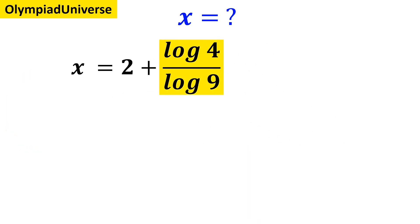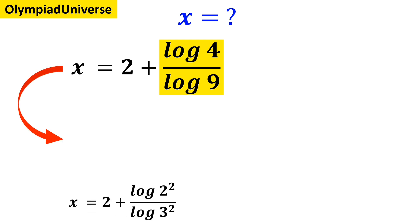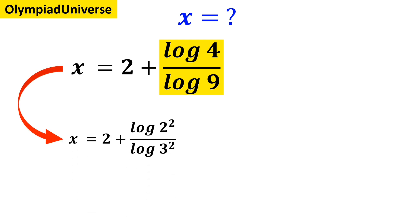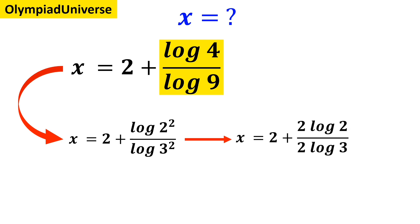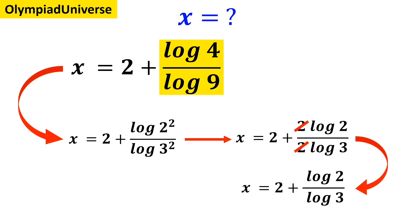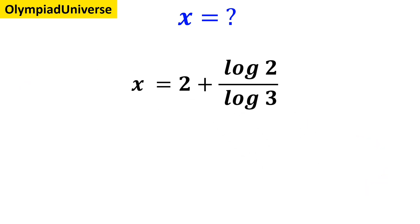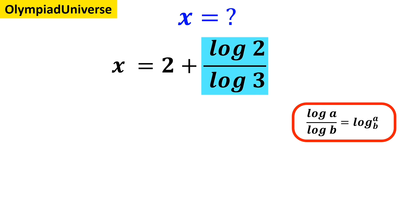Now it's time for the second fraction. We can rewrite this expression as x equals 2 plus log of 2 squared over log of 3 squared, which simplifies to x equals 2 plus 2 times log of 2 over 2 times log of 3. Now the 2's cancel out, and this expression simplifies to x equals 2 plus log of 2 over log of 3. According to the rules of logarithm, log of a divided by log of b is equal to log of a with base b.